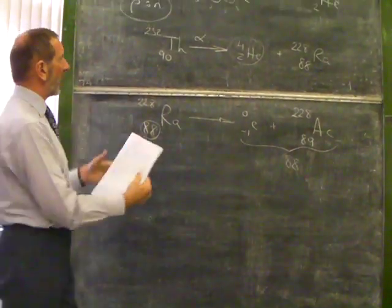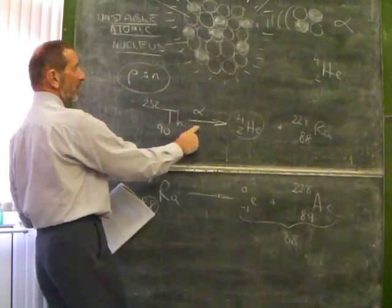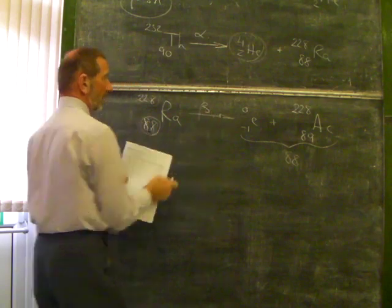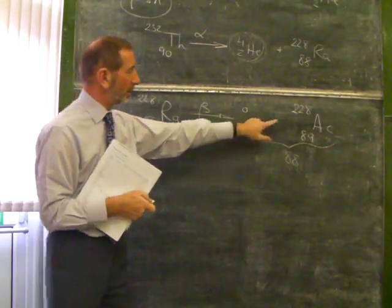You should be able to write equations like that - where an alpha particle is lost and work out what's left, where a beta particle is lost and see what remains.